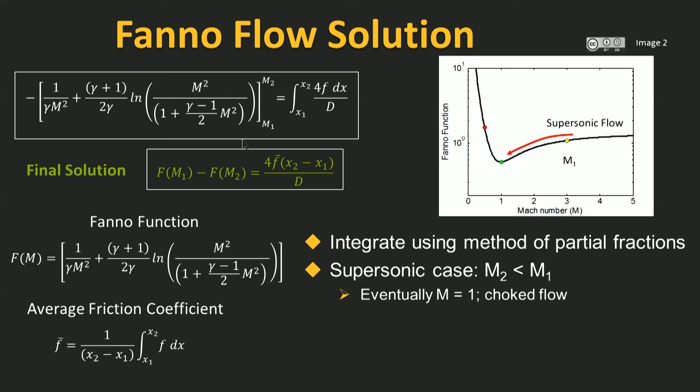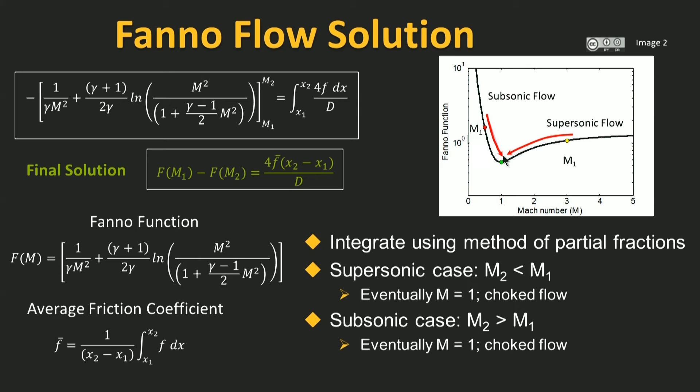Similarly, if we start out with the point M1 on the subsonic side, making use of similar arguments, we'll find that the downstream Mach number M2 can only exist between this location and Mach 1, which essentially means that as we traverse downstream for a subsonic case, the flow will accelerate starting from this Mach number towards Mach number equals one. Therefore, in both cases, whether we start out being supersonic or subsonic, as we increase the length of the pipe and travel further downstream, eventually the flow is going to choke at some point, and the Mach number will reach Mach 1.